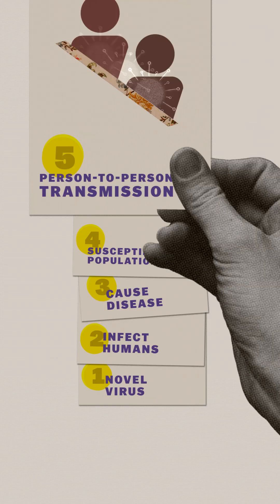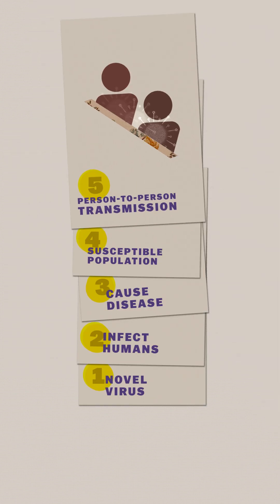But very importantly, the virus has to be able to spread efficiently from person to person through sustained chains of community transmission. This is generally what public health experts are on the lookout for, and why monitoring this virus is really important.